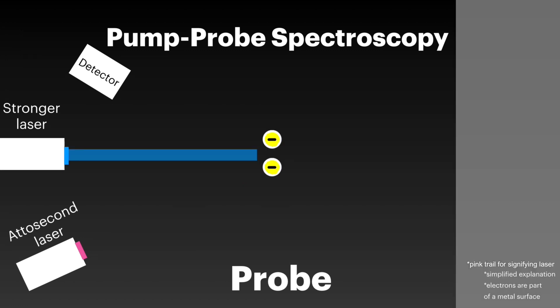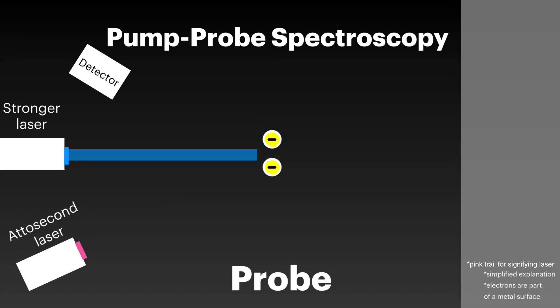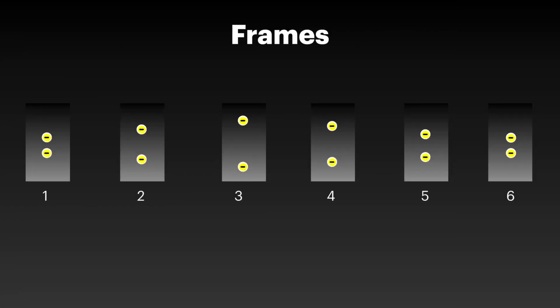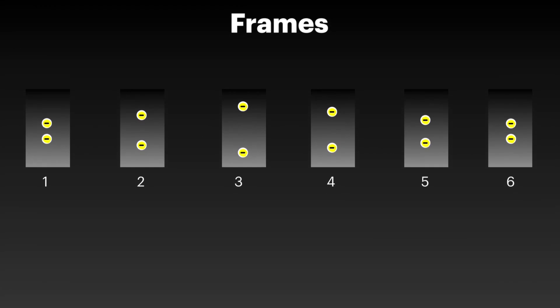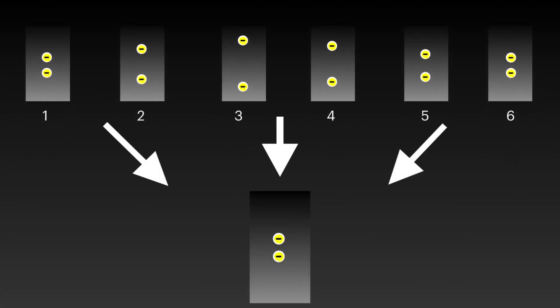Then, by changing the delay time between the pump and the probe light bursts, the position of the electrons at a different point in the movement is measured. After doing this over and over again, the locations of the electrons in each measurement or frame, which occur at different points in time, can be combined together to reconstruct or create a video of the electron's motion.